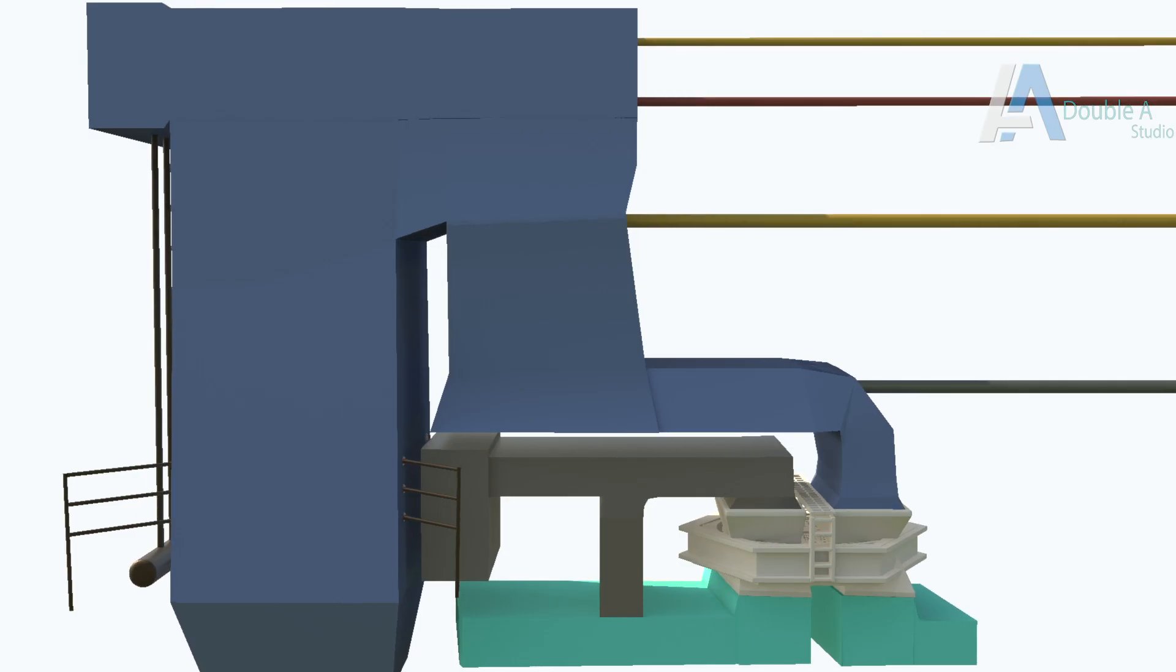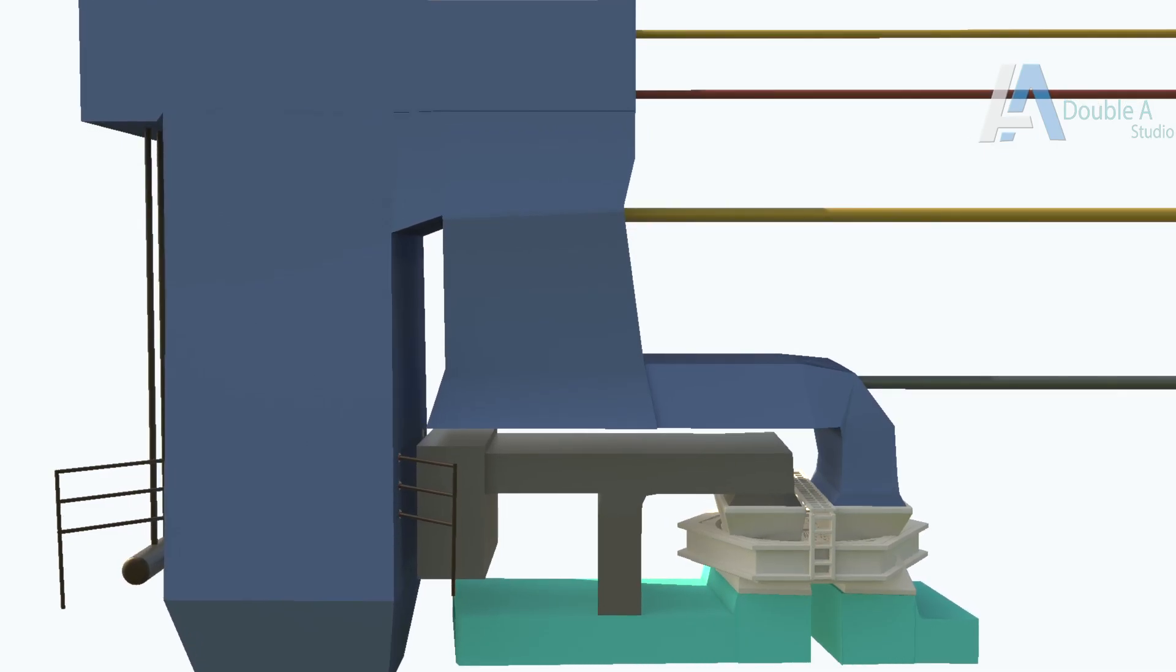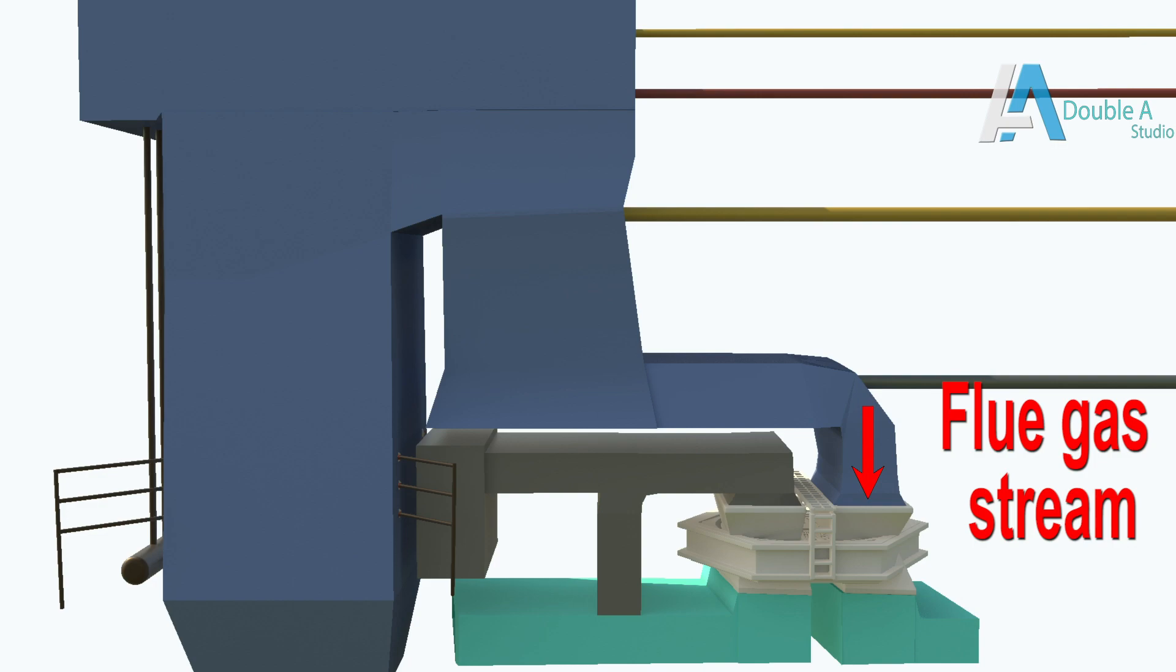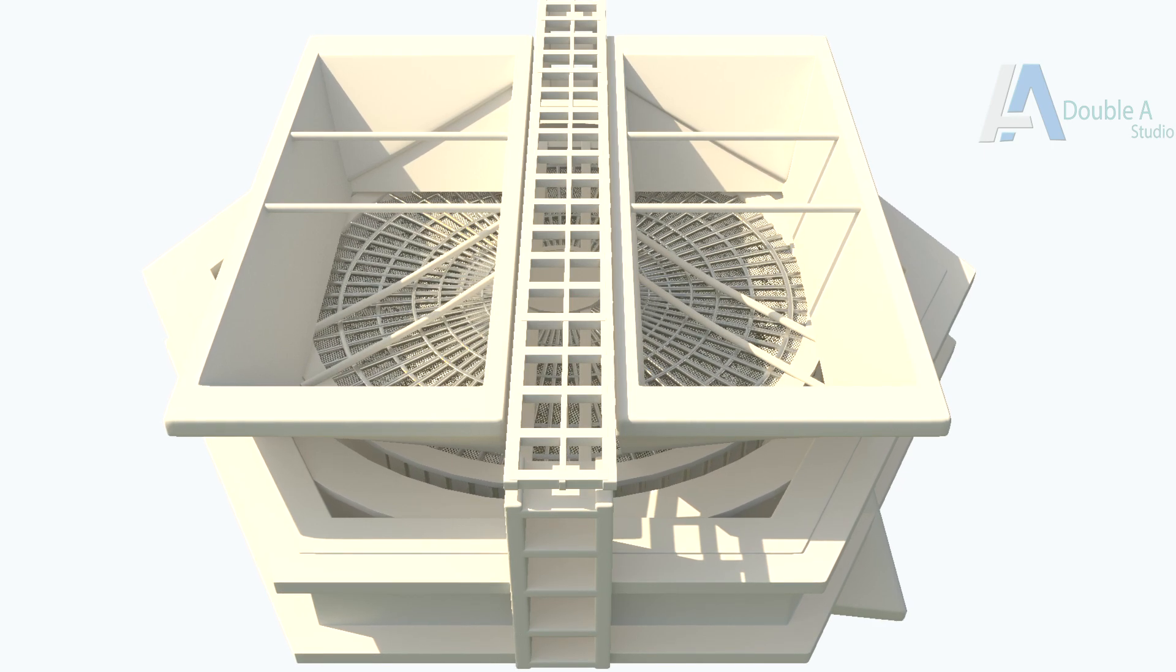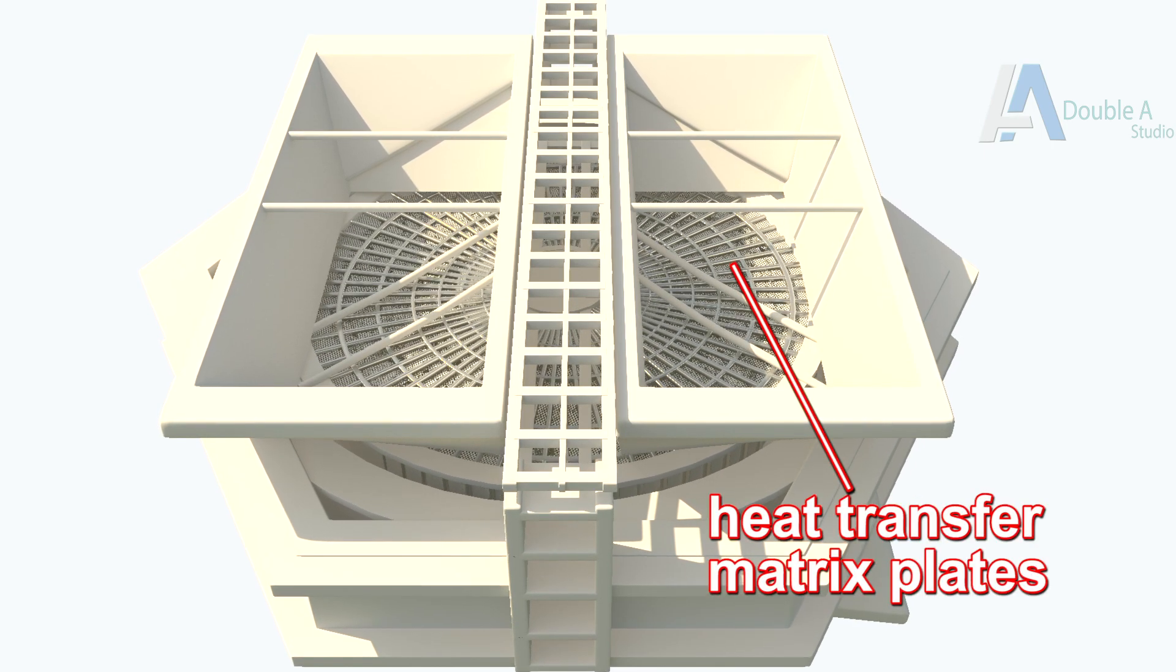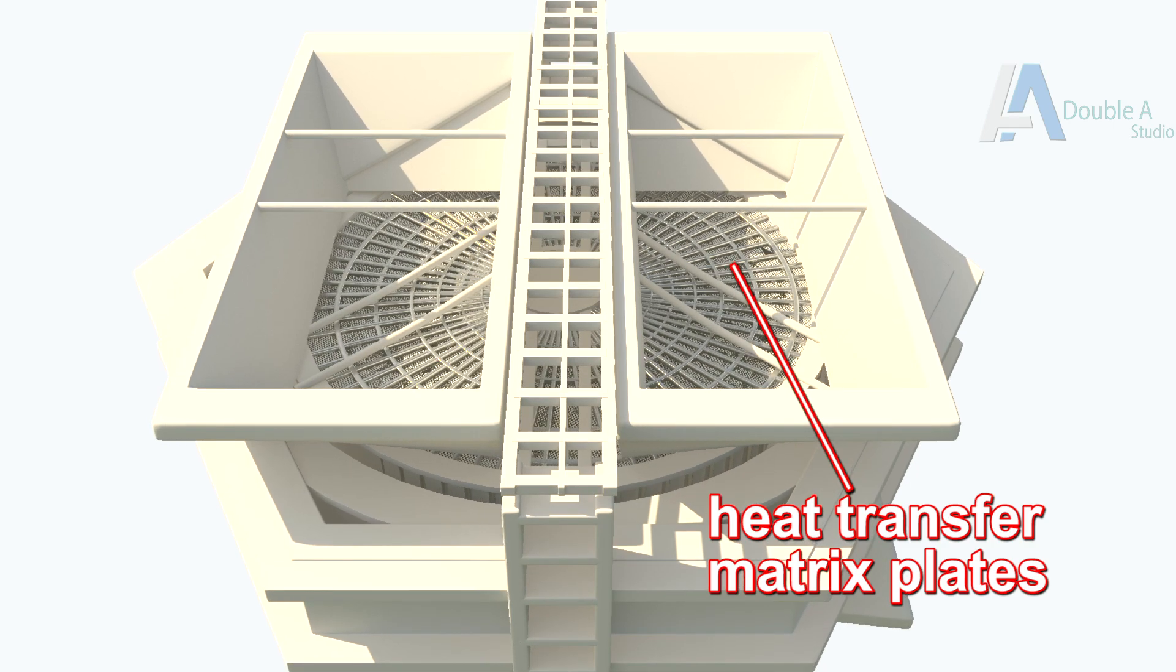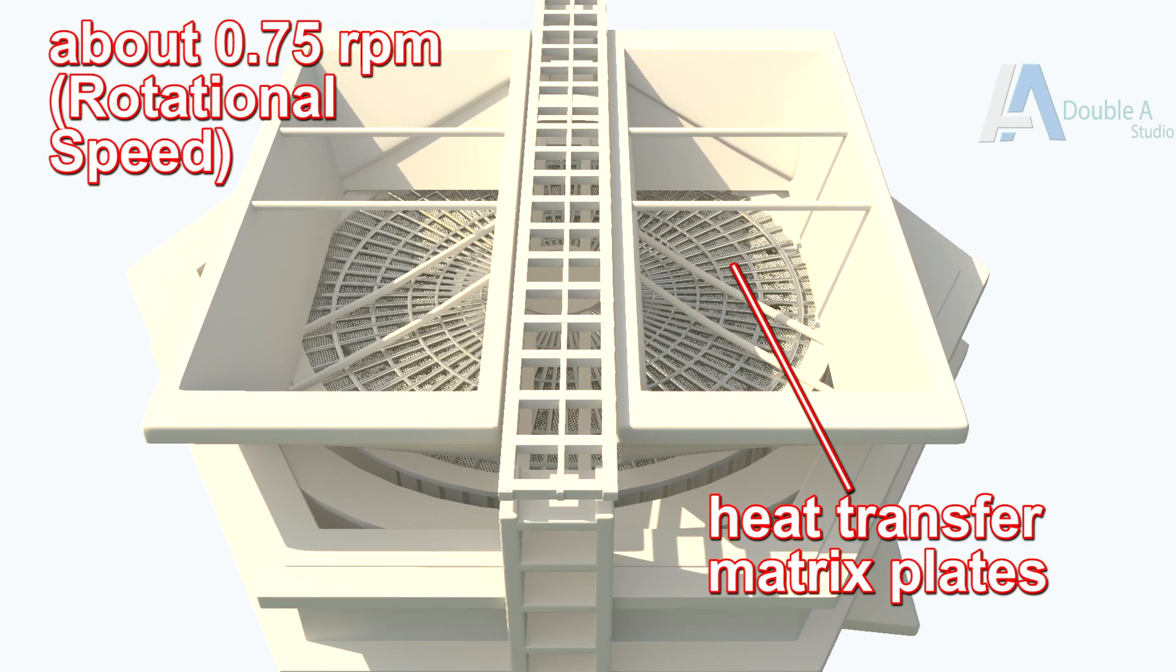The term tri-sector stands for single flue gas and two out streams of air called primary and secondary air. At inlet duct, forced draft fan forces ambient air which on heating diverts as primary and secondary air. It has rotating part which is closely packed with heat transfer matrix plates. The rotor rotates at very slow speeds, about 0.75 RPM.